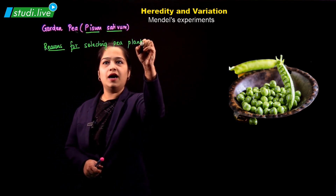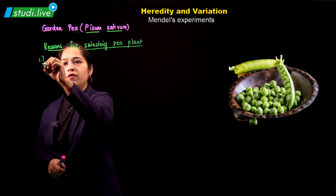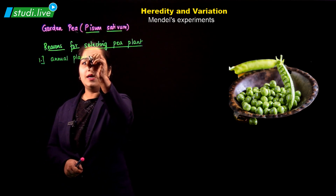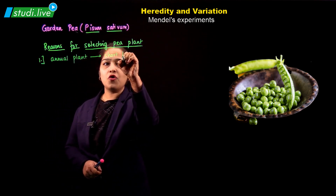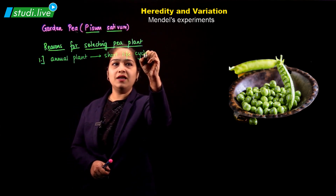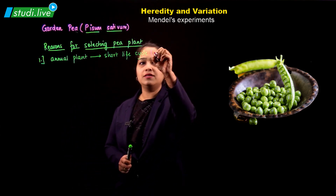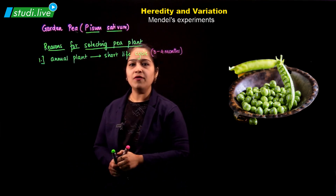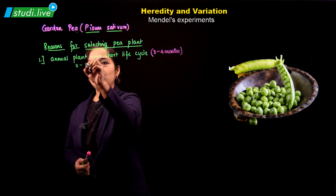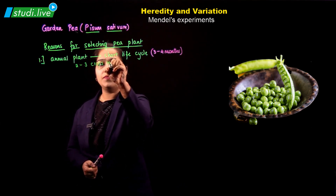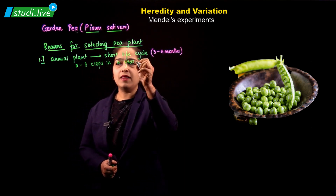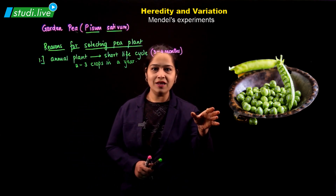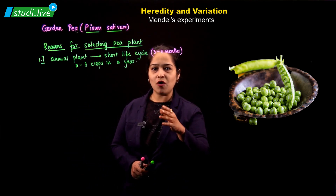The first reason is that Garden Pea is an annual plant, which means it grows throughout the year. It has a short life cycle of only three to four months, and two to three crops can be produced in a year.